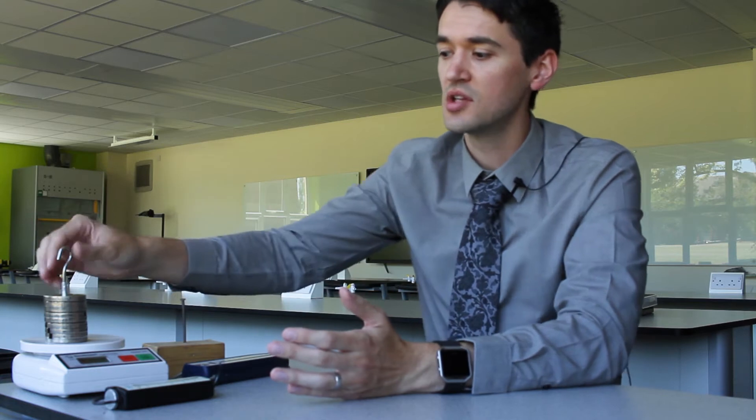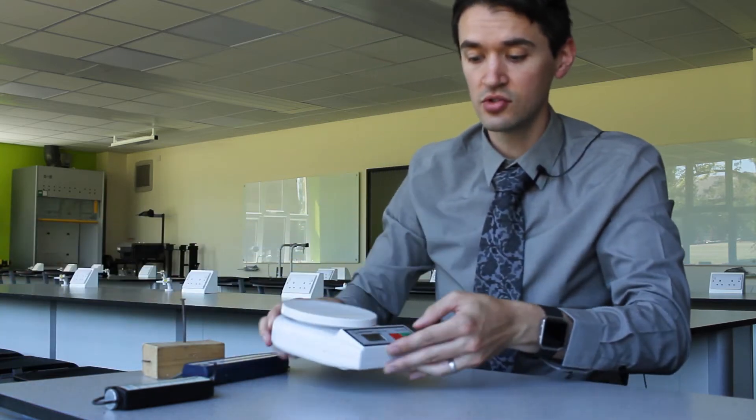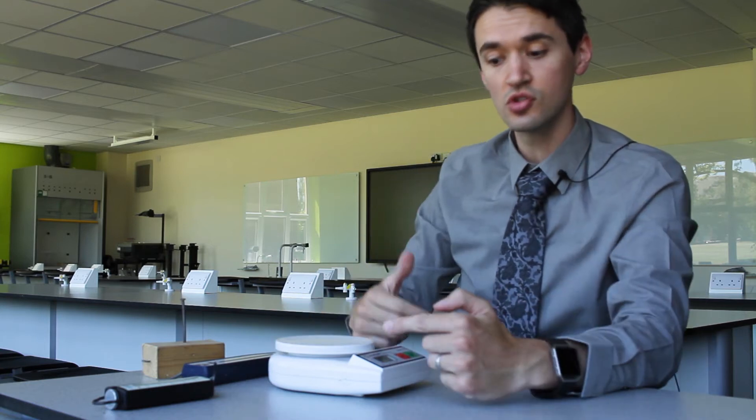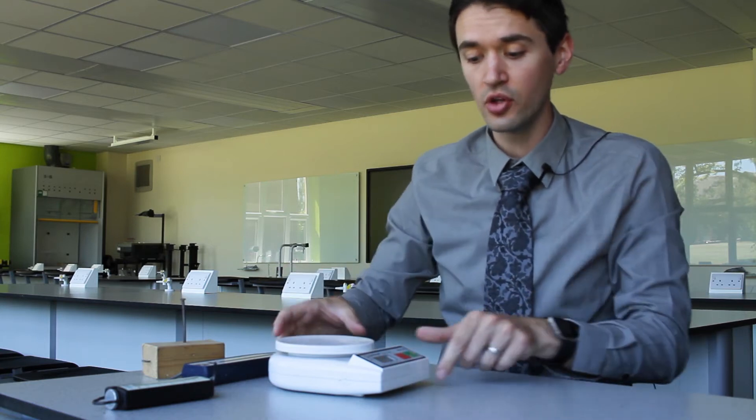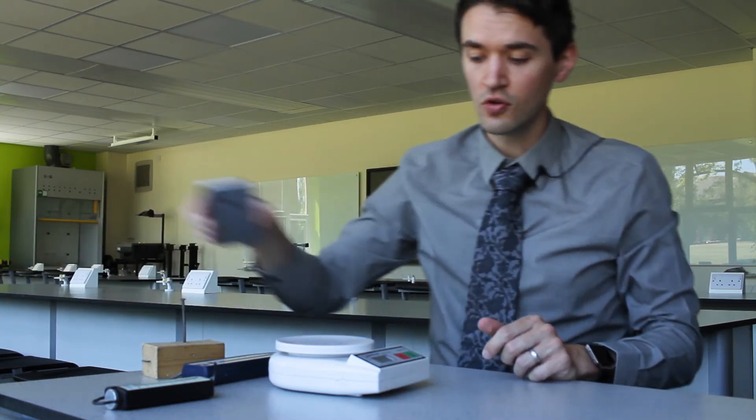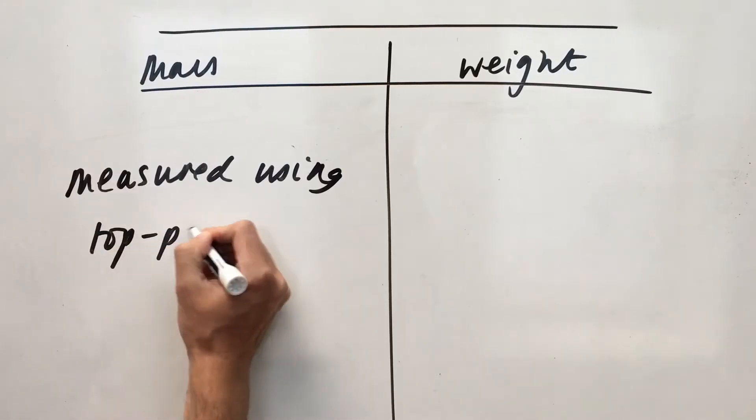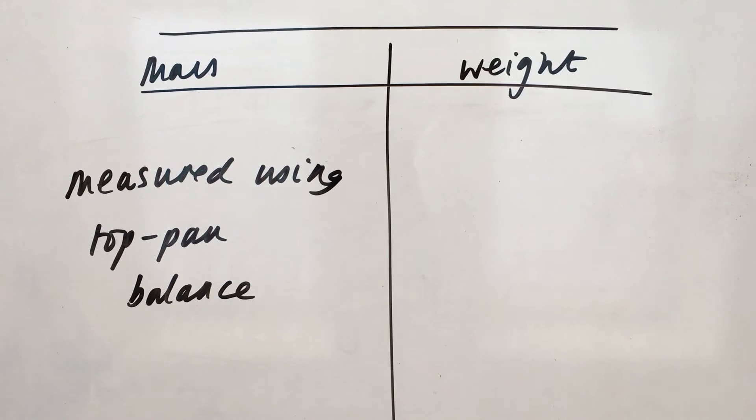The final thing is how you measure mass and weight. So to measure the mass of something, you just use one of these top pan balance. So you make sure it's set to zero, so there's no zero error at the beginning. You put the object on, and then you'll just find out its mass. A lot of people just say it's a set of scales, but it's a top pan balance.